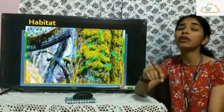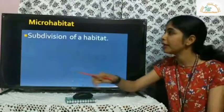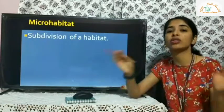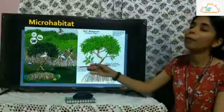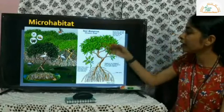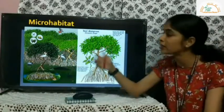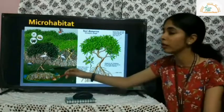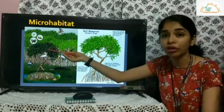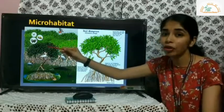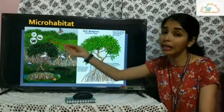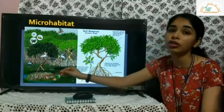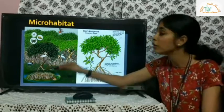A habitat can also be a small burrow in the ground where organisms thrive. Then we have something called a micro habitat — the furthest subdivision of a larger habitat. For example, a mangrove habitat can be divided into two micro habitats: the upper canopy (leaves and branches) where migratory and local birds nest, insects live, and snakes thrive; and the roots and bottom where crabs and insects take shelter.